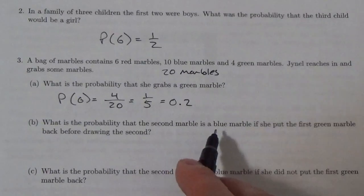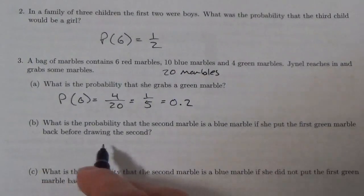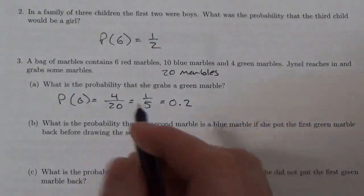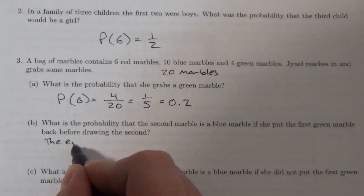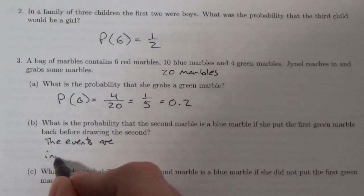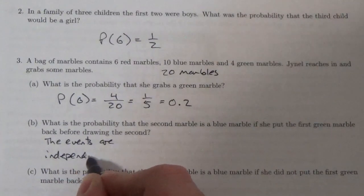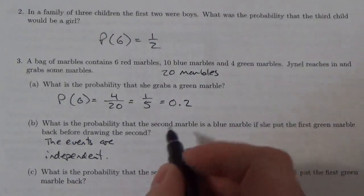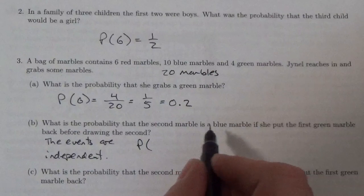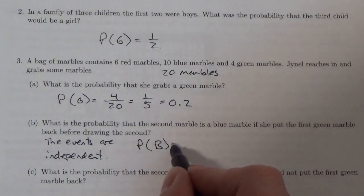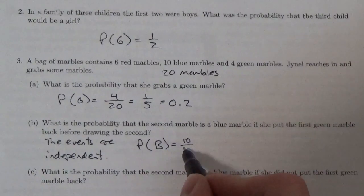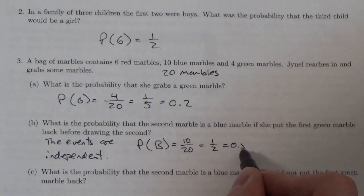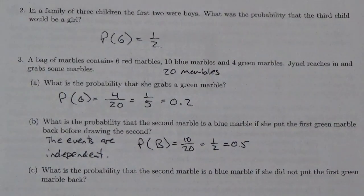What is the probability that the second marble is a blue marble if she put the first green marble back before drawing the second? As soon as she puts that marble back in, the events are independent. The whole question resets. The probability that the second marble is blue is 10 out of 20, which is one out of two or 0.5. That's a 50% probability.